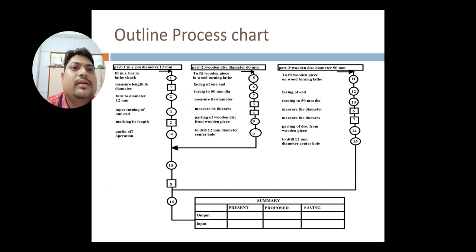Part 1, that is MS pin. Part 2, wooden disc, diameter 60 mm. Part 3, wooden disc, diameter 50 mm. You can see a circle and square over there. Only two symbols. As I have said, operation and inspection are the only two things that we need to get from this. We can get the information from this outline process chart.